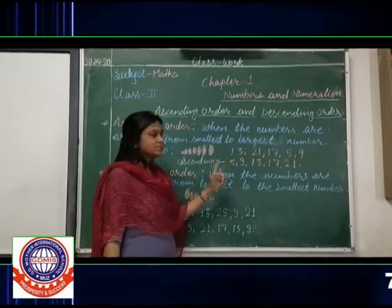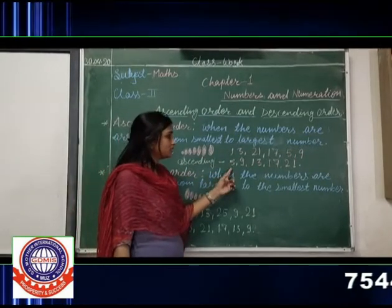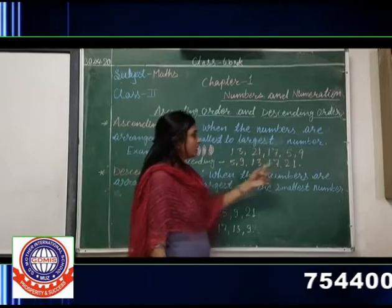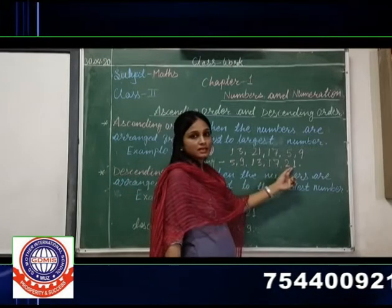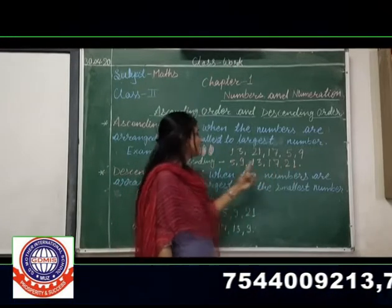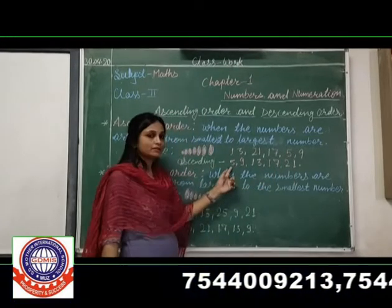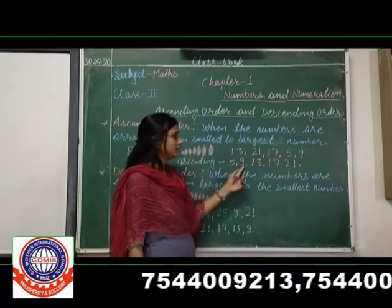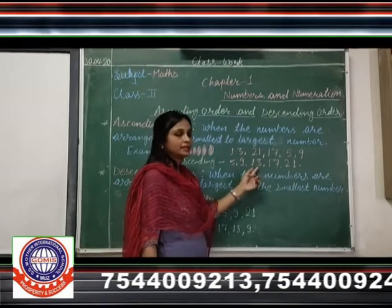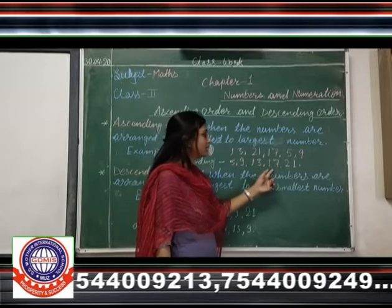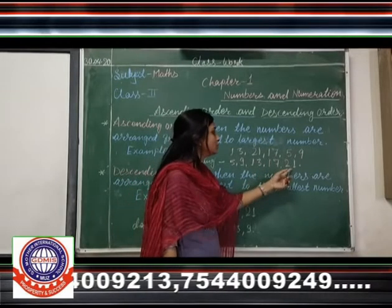First we write the smallest number and aim for the largest number. First we write 5, then 9, then 13, then 17, and 21.